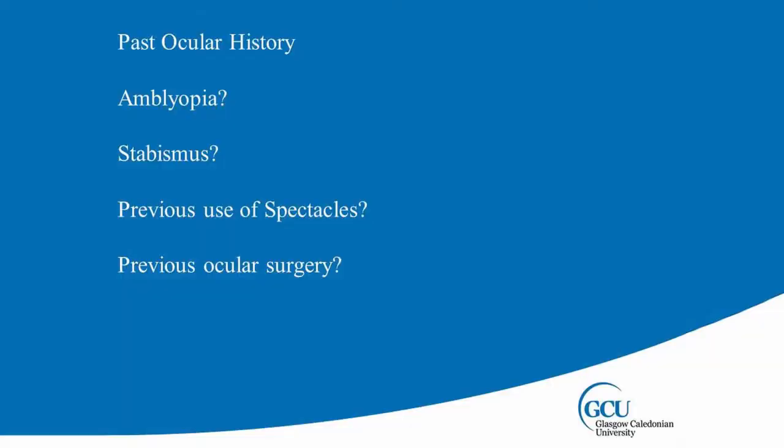Past ocular history is important because sometimes they have an amblyopic eye and the vision isn't going to get any better anyway — but if you're referring on, it's useful to the person being referred to that they know the eye can't achieve better vision. Has there been any previous ocular surgery? Was it recent? Are there any post-operative complications you should be looking for — could be sutures, could be uveitis?